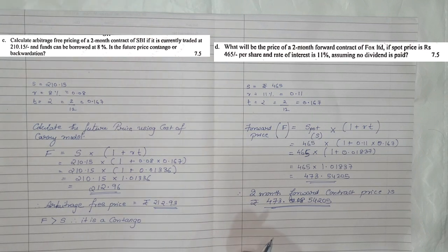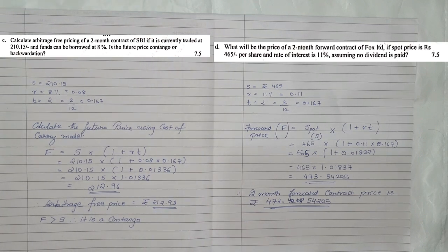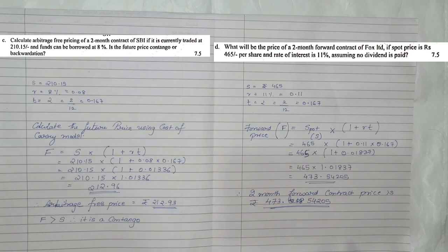This is how you solve the sum based on forward rate when they give you the spot rate and the interest rate. Therefore, the 2-month forward contract price is Rs. 473.54. You can go through it once and then we will jump to the next type of sum.